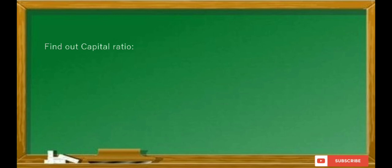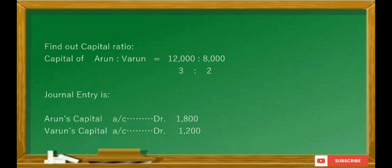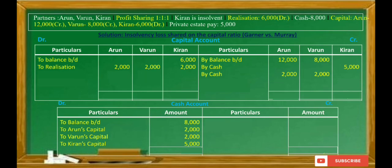Under Garner vs. Murray, the insolvency loss is shared by solvent partners in their capital sharing ratio — not the profit sharing ratio. The capital of Arun to Varun is 12,000 to 8,000, which simplifies to a ratio of 3:2. So the insolvency loss sharing ratio is 3:2. The journal entry is: Arun's Capital Account debit 1,800, Varun's Capital Account debit 1,200, to Kiran's Capital Account 3,000 rupees. Total loss of 3,000 shared as 1,800 and 1,200.